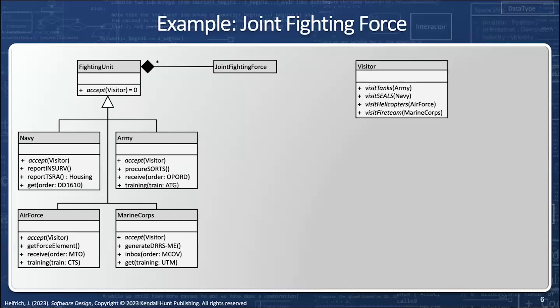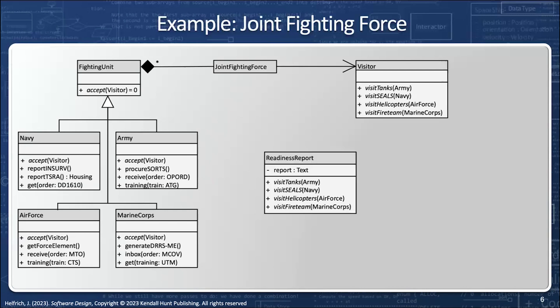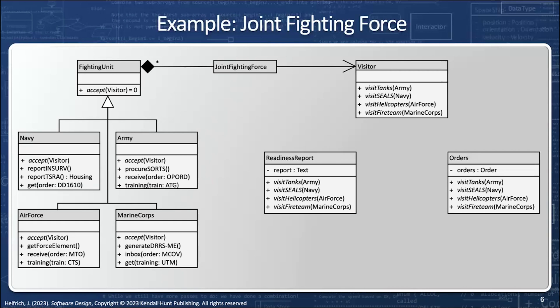Next, we'll define a visitor class to represent the types of messages we want to send to each fighting element. The client utilizes a visitor to send messages to the fighting units rather than containing one as a member variable. The first type of message we'll send is to get a readiness report. The second message will send orders to the various fighting units. These two concrete visitors are related to the visitor base class through inheritance. Notice how each visitor has a method dedicated to a fighting unit — right now there are four fighting units, so four methods in the visitor class. If there were 20 elements, we would have 20 methods. Each visitor calls the individual method in the fighting unit's class to send or receive information.